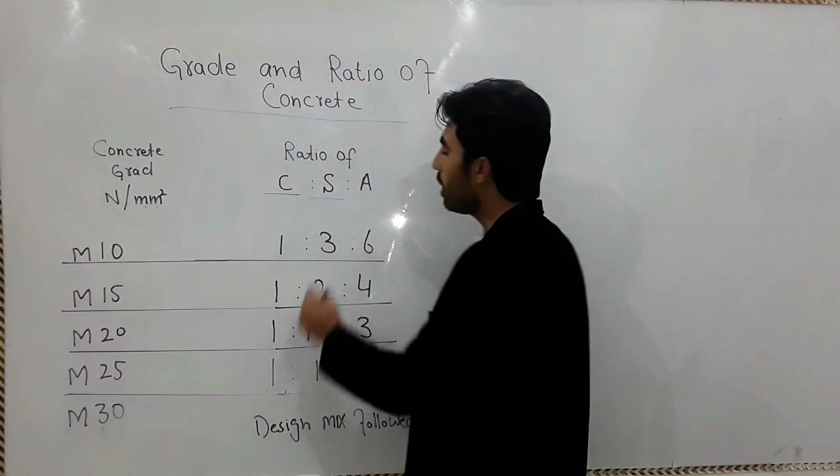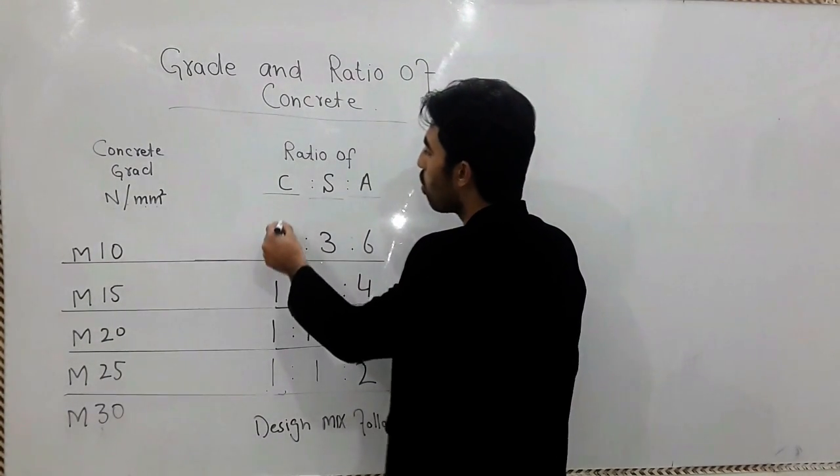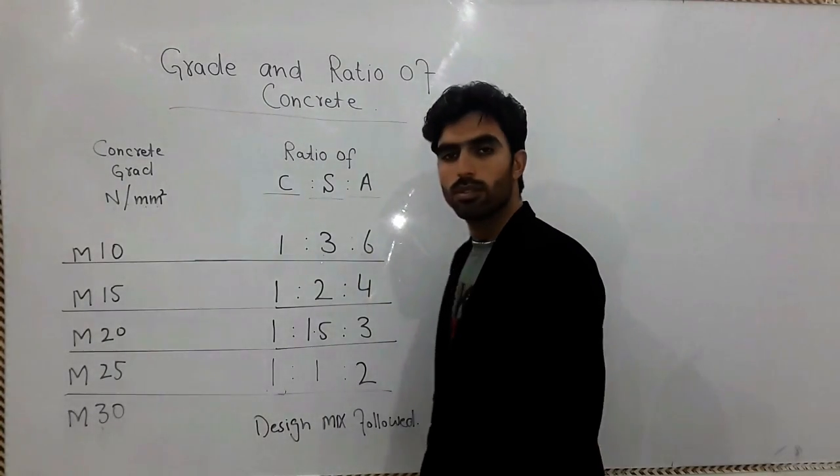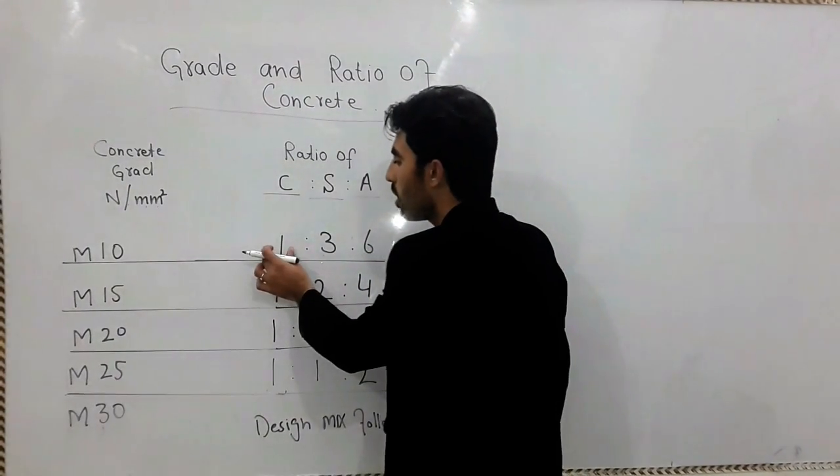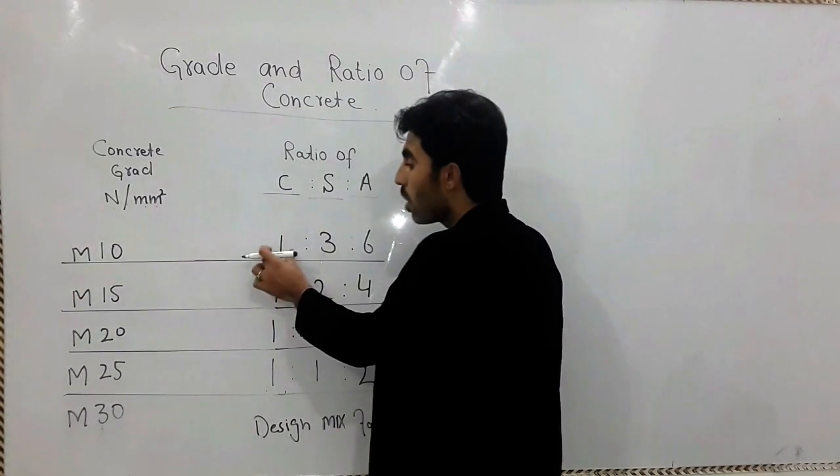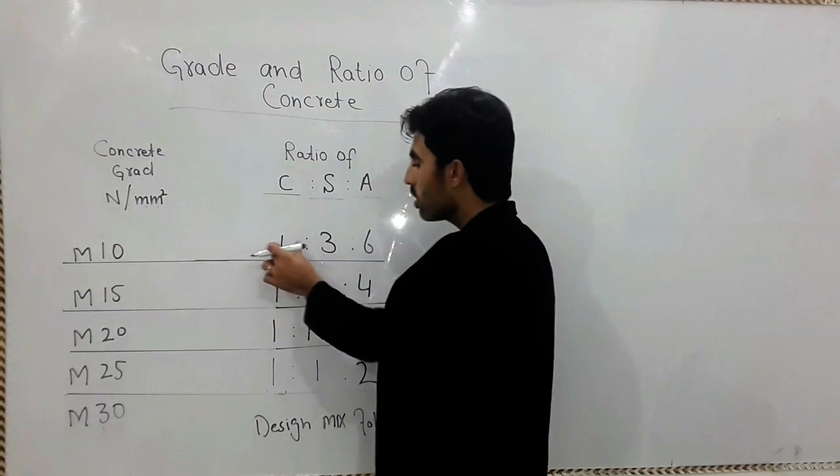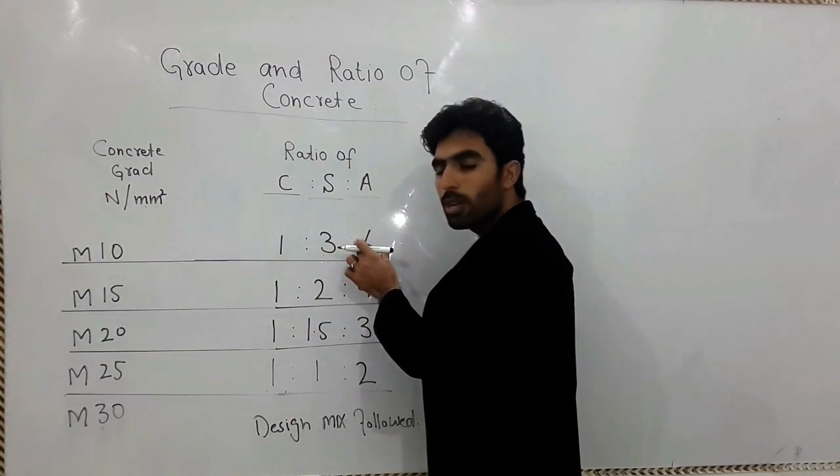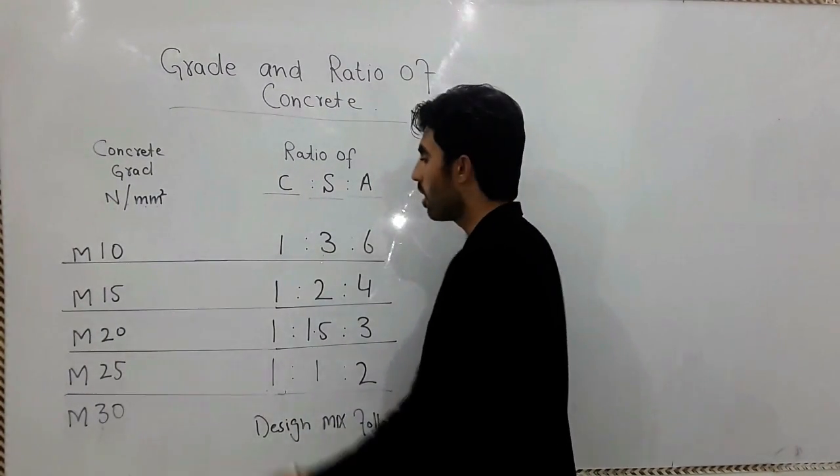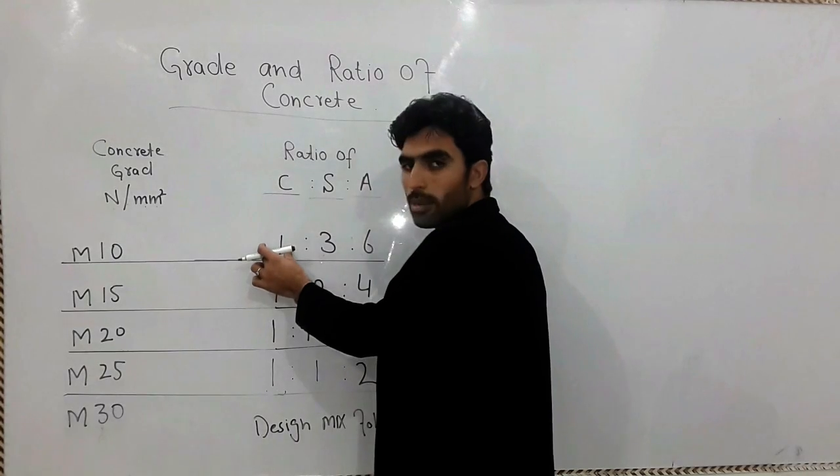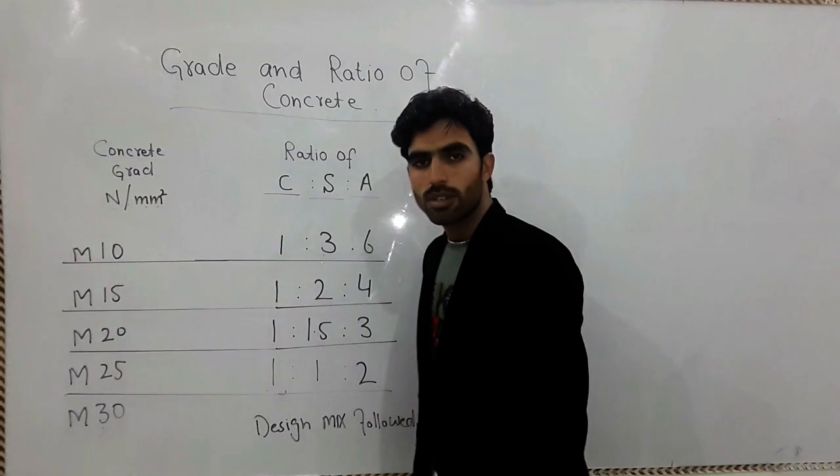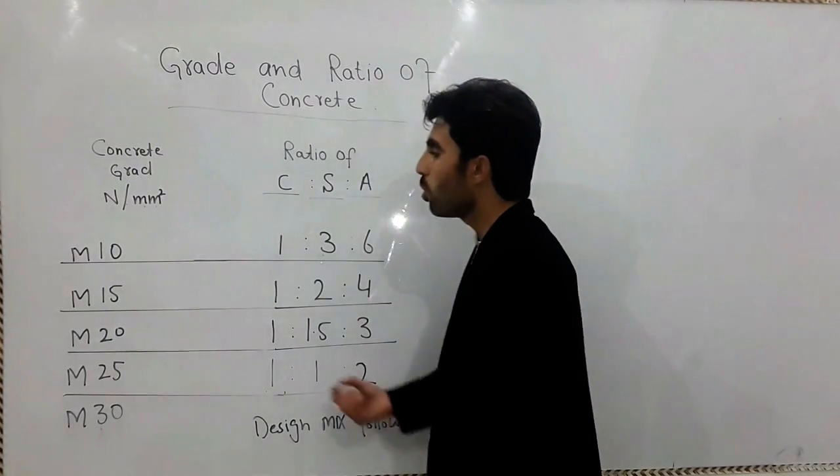So one cement, three sand and six aggregate. Also you can suppose, for example, one cubic feet cement, three cubic feet sand, six cubic feet gravel - you can say aggregate. Also you can say one kg cement, three kg sand, six kg aggregate.